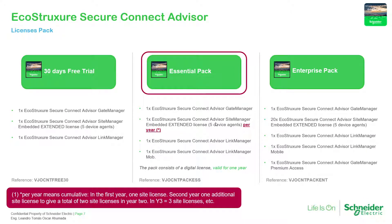Something important about the essential pack is that the extended license is accumulative. In the first year you have one extended license. In the second year, the extended license accumulates — so in the second year you will have two extended licenses, for a total of ten device agents. In the third year you have three, for a total of fifteen device agents. This pack is paid per year, so you need to renew it. The renewal will only accumulate the extended license part.